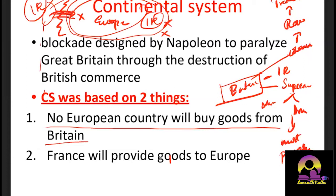The second component of the Continental System was that France would undergo its own industrial revolution and supply goods to all other European states. When the blockade prevented Britain from selling goods to Europe, France would fill that gap. Additionally, Napoleon gave a threat: if any country did not agree to the Continental System, he would 'export the French Revolution there' — meaning he would go and conquer that area.